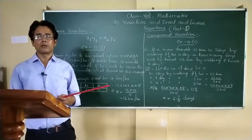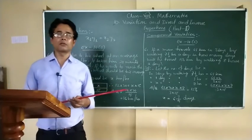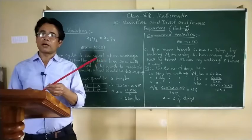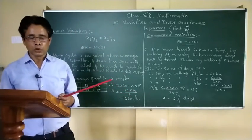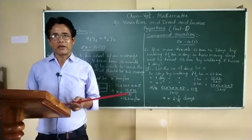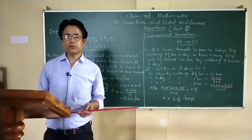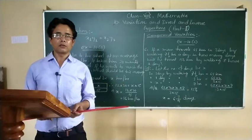When one quantity is decreasing, the other is increasing. In case of direct variation, we have seen that with the increase in one quantity, the other quantity also increases in the same proportion.